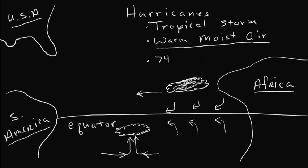When it comes to about 74 miles per hour, it is considered no longer a tropical storm — it's considered a hurricane. And that's kind of the beginnings of it.